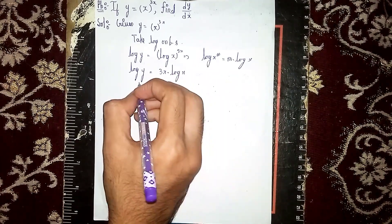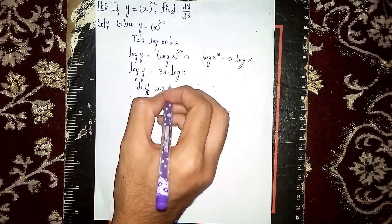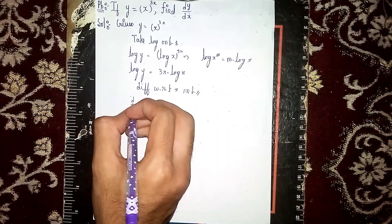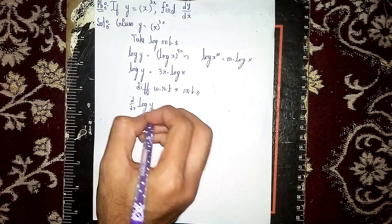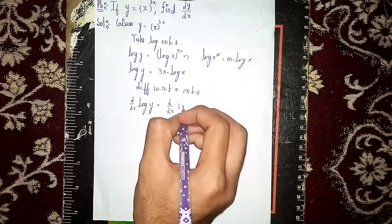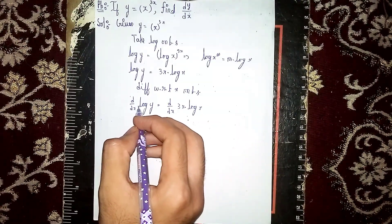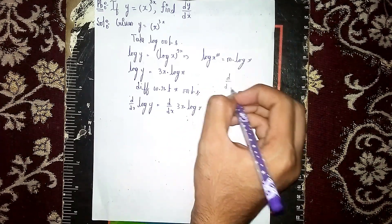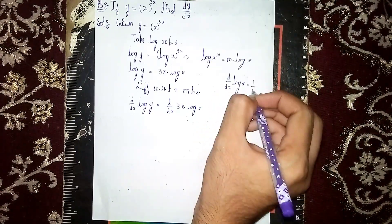Now differentiate with respect to x on both sides. So d/dx of log y is equal to d/dx of 3x into log x. Now here we use the formula d/dx of log x is equal to 1/x.